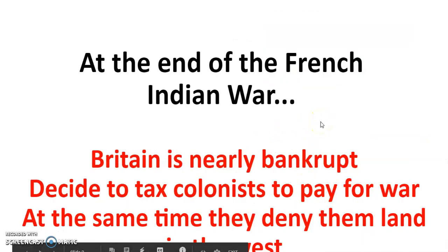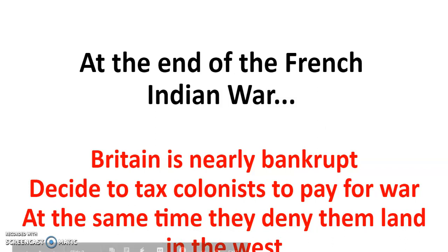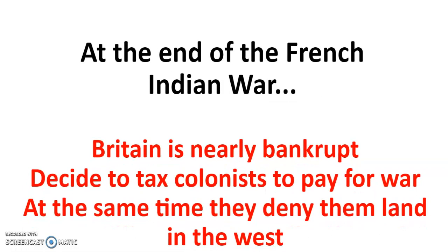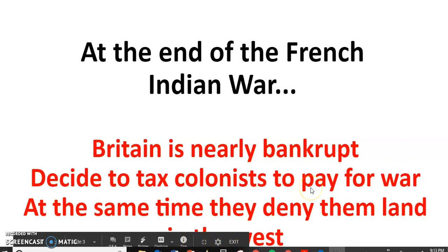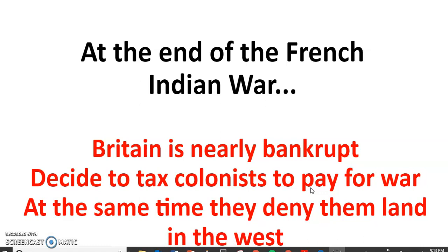At the end of the French and Indian War that you learned about, Britain is nearly completely bankrupt — they have nothing left in their treasury. On top of that, they decide to tax the colonists to pay for that war and replenish the treasury. And at the same exact time, they deny the colonists from moving west — the very land the colonists were fighting for in the French and Indian War.